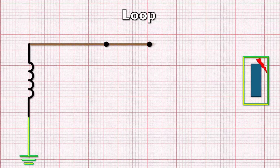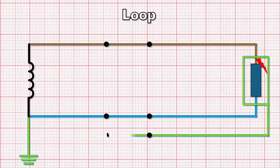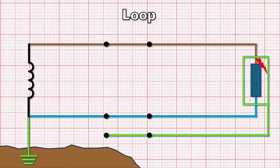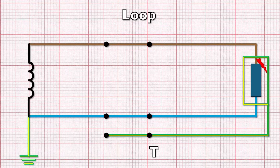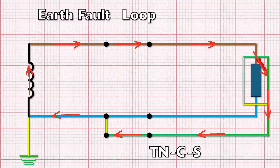the meter tails, any submains, and then the line conductor of the circuit in question. Then there's the fault itself, the CPC back to the main earth terminal, the earthing conductor either to the supplier's means of earthing or the earth electrode, and then the path back to the supply transformer either through the literal earth or through the supply cable. The circuit is completed through the winding of the supply transformer — so you can see it forms a great big loop, hence 'earth fault loop'.